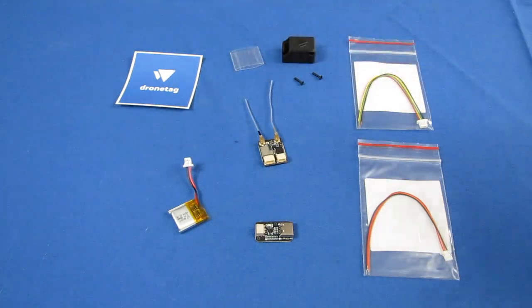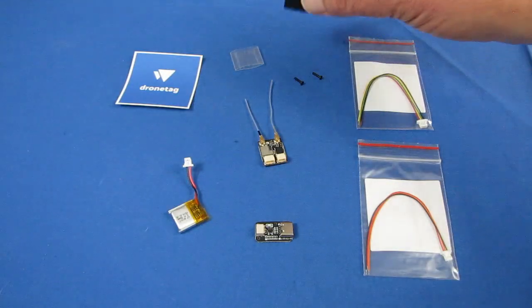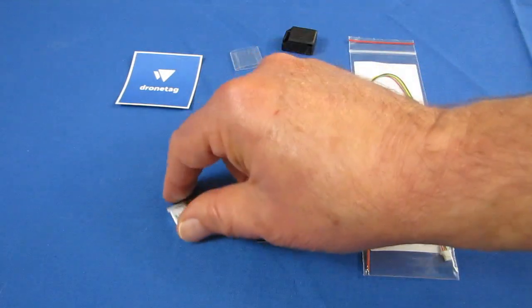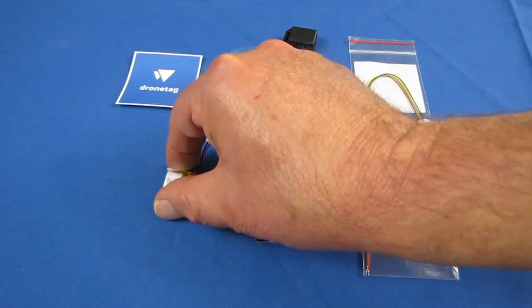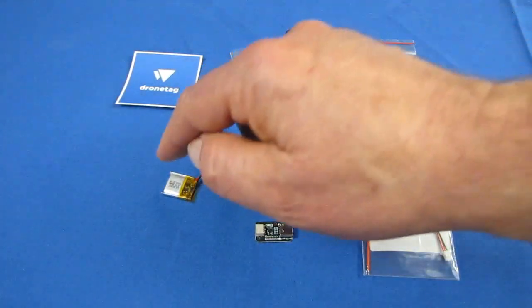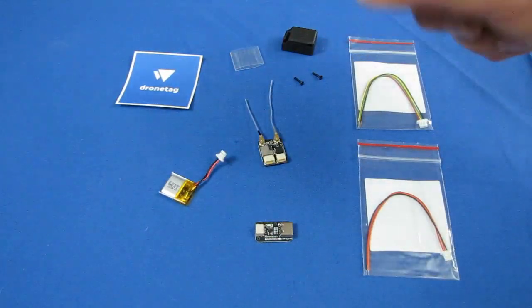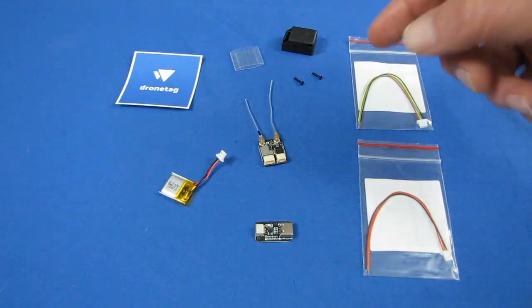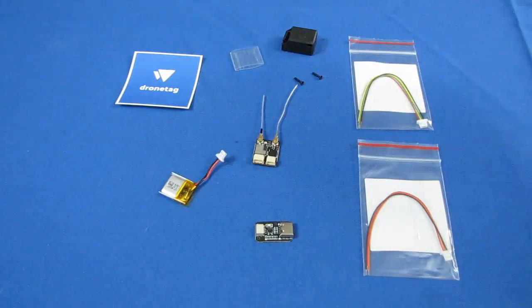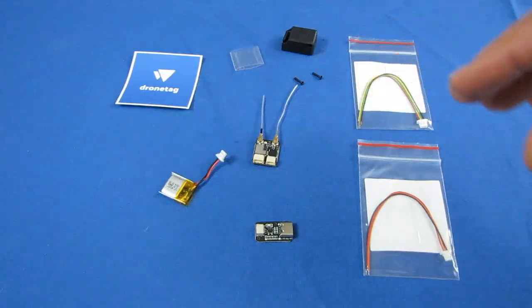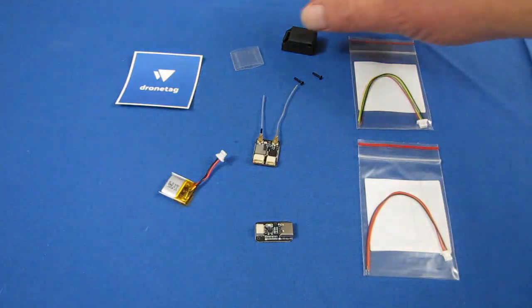However, this case does add some weight. It's 1.6 grams added weight, along with this battery, adds 1.9 grams. So with the case, the module and the battery added, the total weight of the system in that case would be 4.8 grams. So keep that in mind. That does add weight if you go that route using the case.